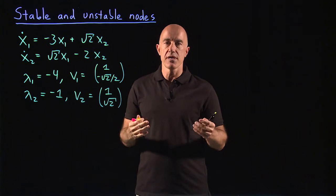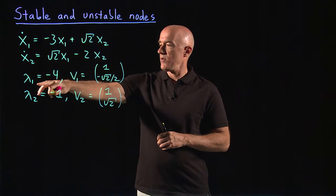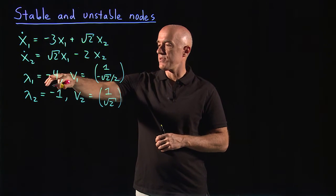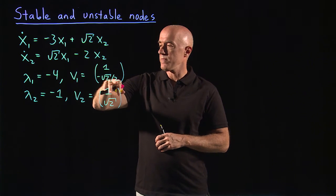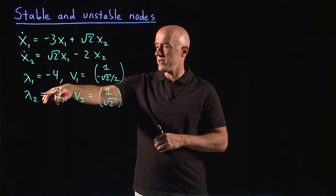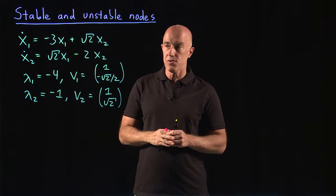We can do an eigenvalue and eigenvector analysis of the matrix. We get the first eigenvalue is minus 4, the first eigenvector is 1 minus root 2 over 2. The second eigenvalue is minus 1, and the second eigenvector is 1 root 2.